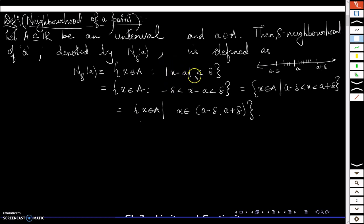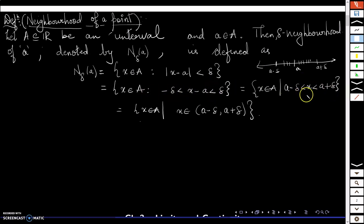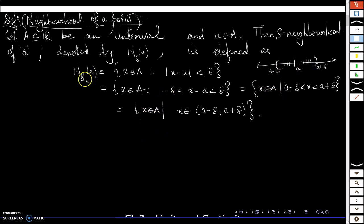So mod x minus a less than delta can be written as minus delta less than x minus a less than delta, and adding a throughout gives the set of all points x in A such that x lies between a minus delta and a plus delta. So I am looking for all the points in A which lie in this interval (a minus delta, a plus delta). The point a is also a part of the neighborhood of a.